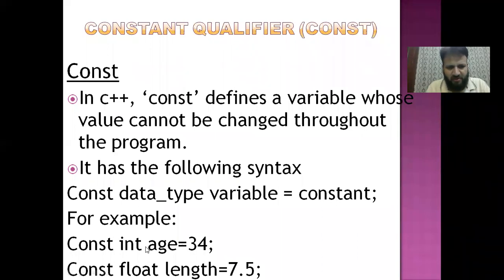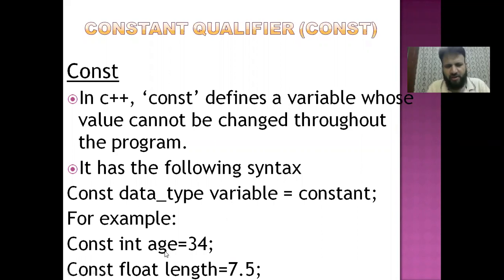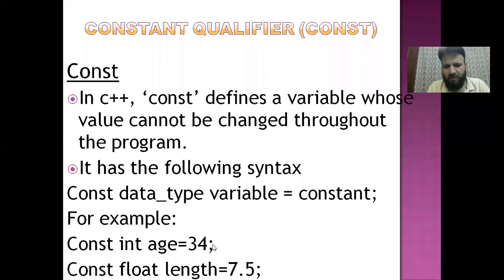For example, const integer age — 'age' is the name of the variable, its data type is integer, and its value is the constant 34, which we have mentioned. Throughout the program, wherever we use age, it will automatically have the value of 34.